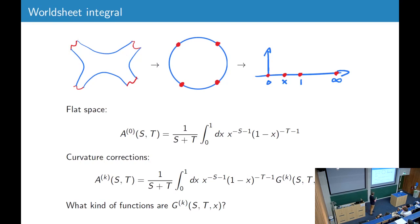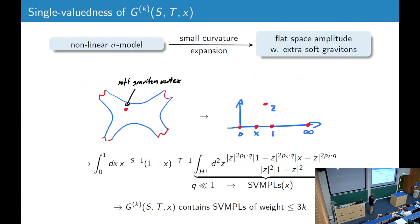So what kind of functions can this be, this integrand? To find more about this, you can consider a nonlinear sigma model and do a small curvature expansion of the metric. So you take the Polyakov action with the curved metric, expand in small curvature, and then what you find is you get the flat space amplitudes with extra soft graviton vertex operators. So if we take like this process, for example, with one extra graviton vertex operator, in all coordinates, we get the four open strings here and one closed string inserted on the upper half plane.